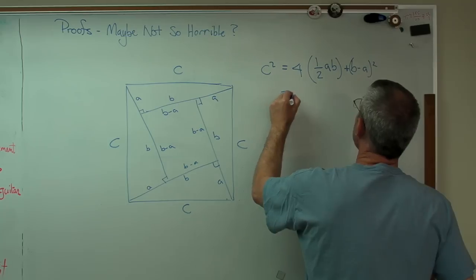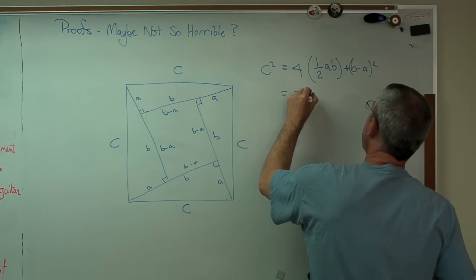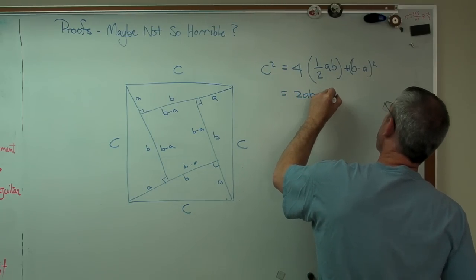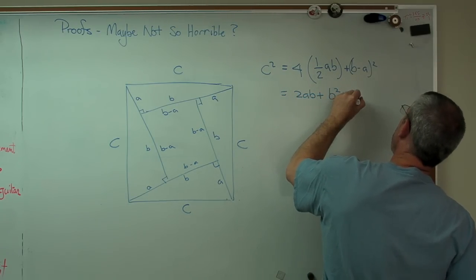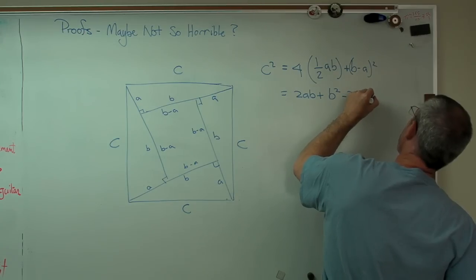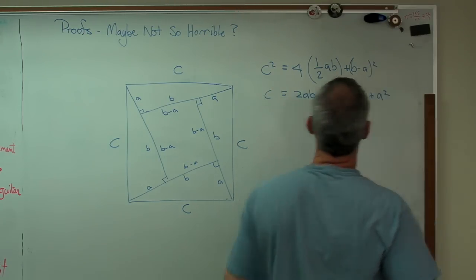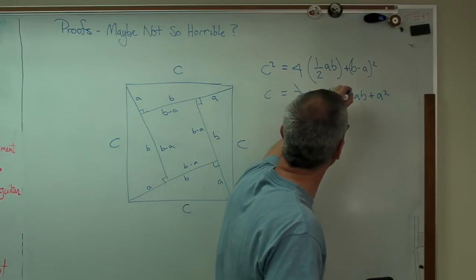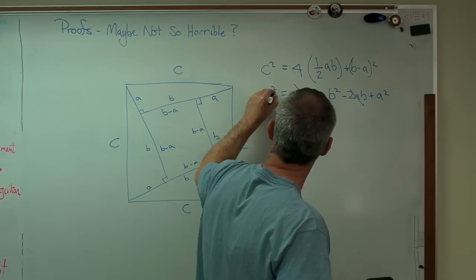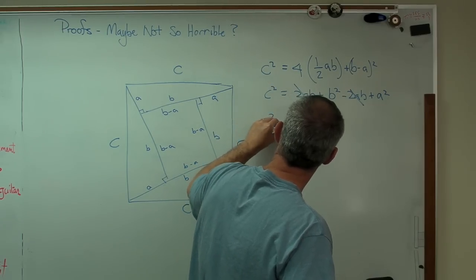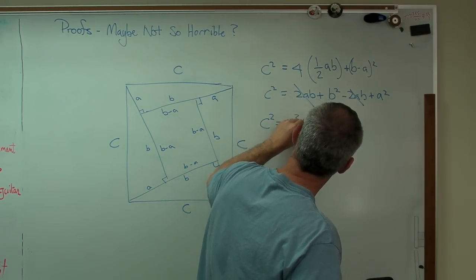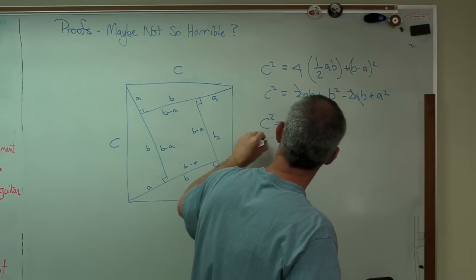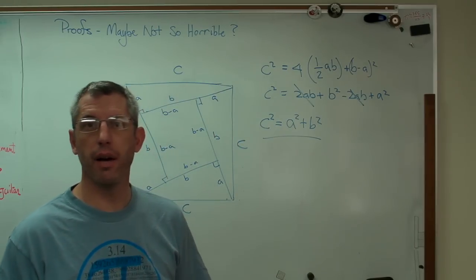So let's do a little bit of math here. Well, let's see. That's two AB plus B squared minus two AB plus A squared equals C squared. All right. No problem, right? So cross that out, cross that out. That's it. That's the Pythagorean theorem.